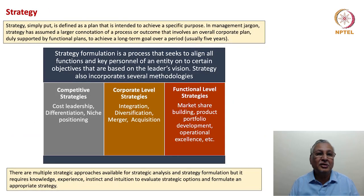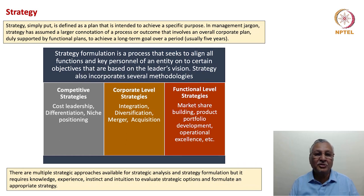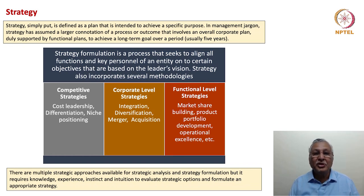Strategy, simply put, is defined as a plan intended to achieve a specific purpose. In management jargon, strategy has assumed a larger connotation — a process or outcome that involves an overall corporate plan developed on an annual basis, duly supported by functional plans to achieve a long-term goal over a period of usually five years. Each functional plan is expected to guide individual functions or departments to accomplish strategic goals. Usually, the first year of the strategic plan would be the annual budget for the company. Strategy formulation is a process that seeks to align all functions and key personnel on to certain objectives based on the leader's vision.